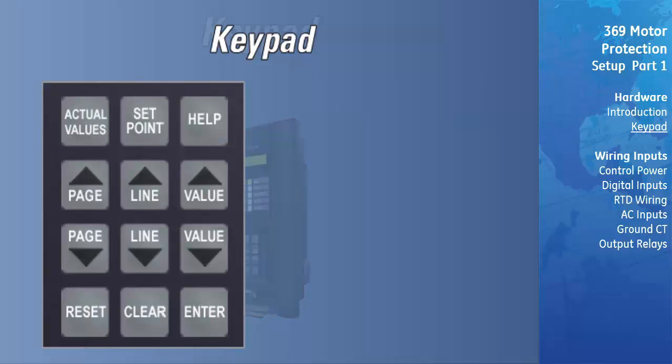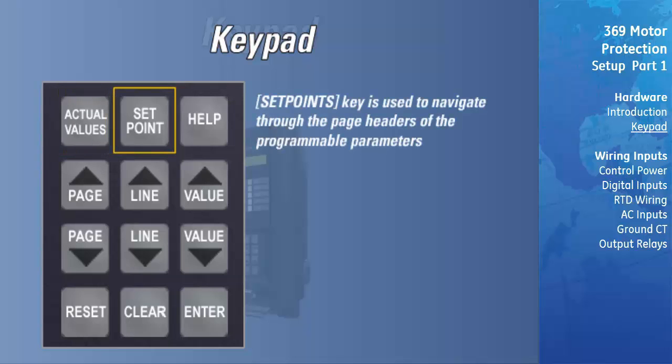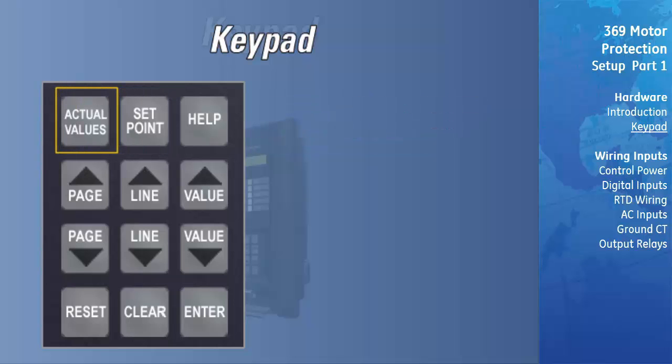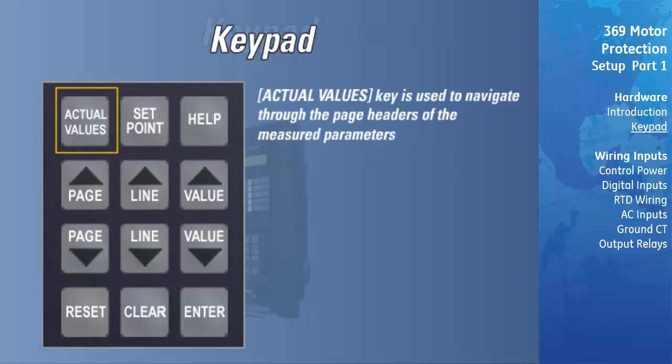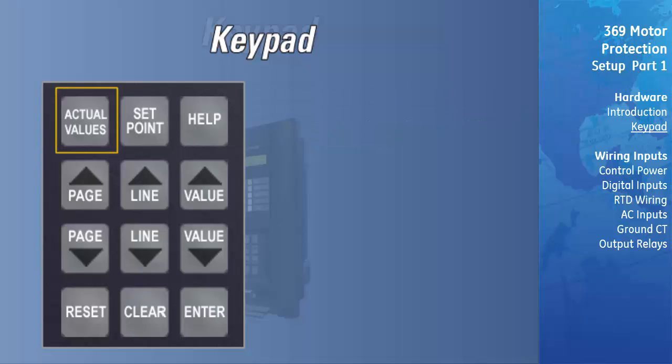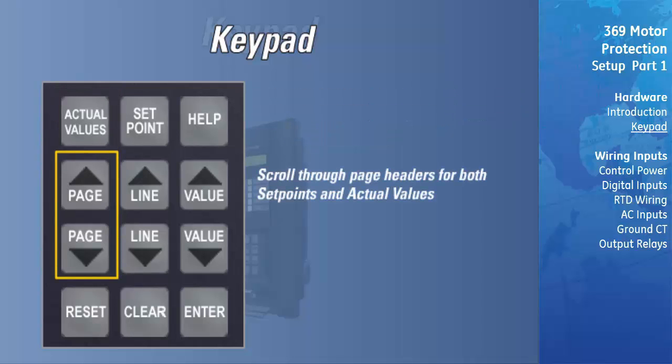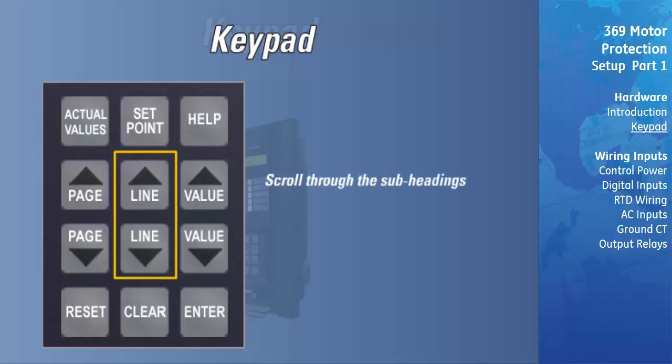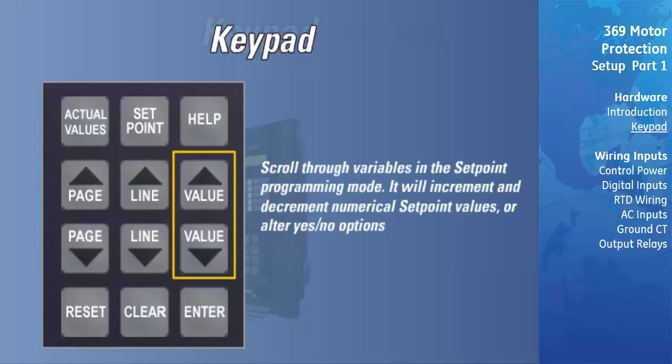The 369 messages are organized into pages under the main headings, set points and actual values. The set points key is used to navigate through the page headers of the programmable parameters. The actual values key is used to navigate through the page headers of the measured parameters. The page up and down keys may be used to scroll through page headers for both set points and actual values. Once the required page is found, the line up and line down keys may be used to scroll through the subheadings. The value up and value down keys are used to scroll through variables in the set point programming mode. It will increment and decrement numerical set point values or alter yes or no options.